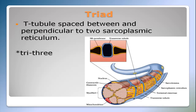Triad. A triad is a T-tubule spaced between and perpendicular to two sarcoplasmic reticulum. In this picture, the yellow surrounding the myofibril is the sarcoplasmic reticulum, which stores the calcium ions. The blue lines running across the myofibril or muscle fiber are the T-tubules. A T-tubule spaced between and perpendicular to two sarcoplasmic reticulum is a triad — three structures involved: two sarcoplasmic reticulum and one T-tubule. Tri stands for three.